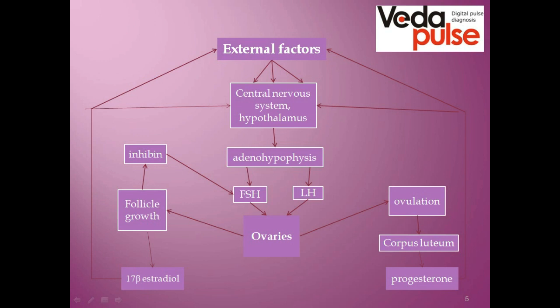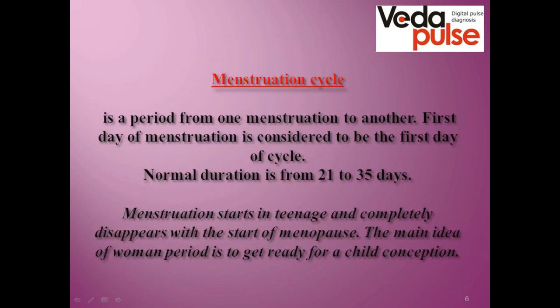Another hormone of the pituitary is luteinizing hormone, which also influences the ovaries but in a different way — it impacts progesterone production and the ovulation process. These cycles form the menstrual cycle, which is the period from one menstruation to another. The first day of menstruation is considered to be the first day of a cycle. Cycles can range from 21 to 35 or even 38 days; we will take an average cycle of 28 days.